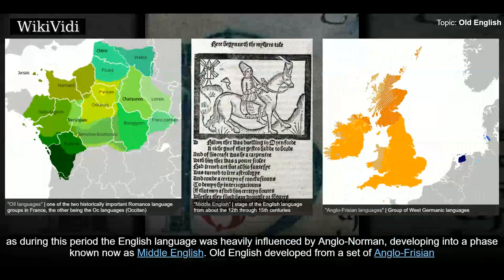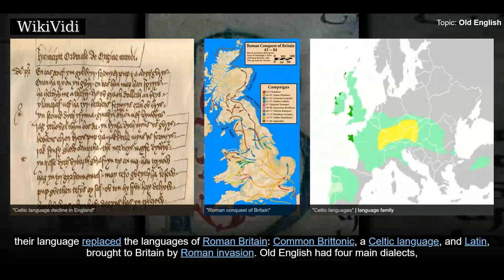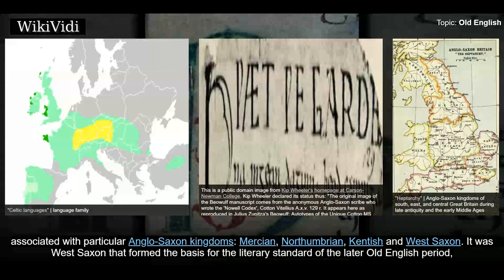Old English developed into a phase known now as Middle English. It developed from a set of Anglo-Frisian, or Anglionic dialects originally spoken by Germanic tribes traditionally known as the Angles, Saxons, and Jutes. As the Anglo-Saxons became dominant in England, their language replaced the languages of Roman Britain — Common Britannic, a Celtic language, and Latin, brought to Britain by Roman invasion.